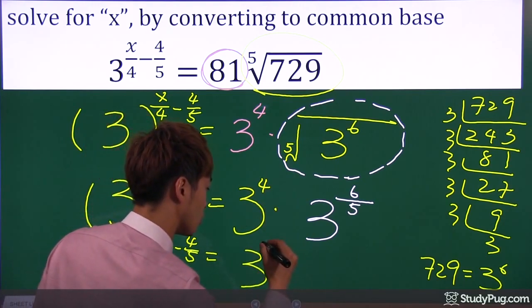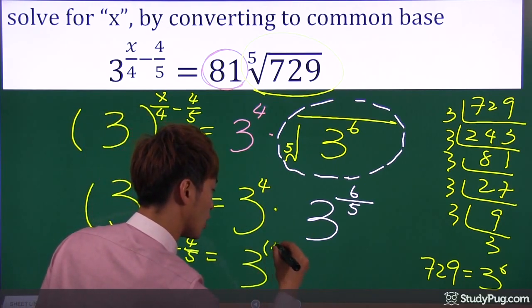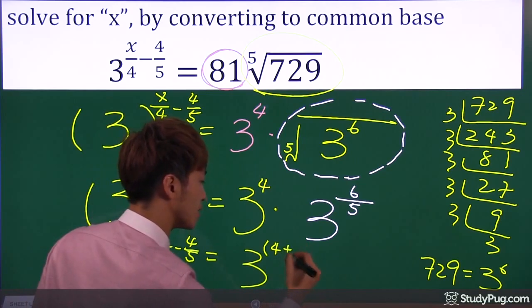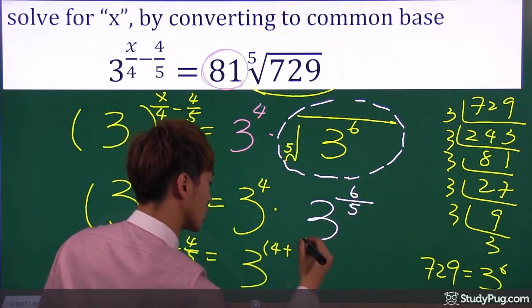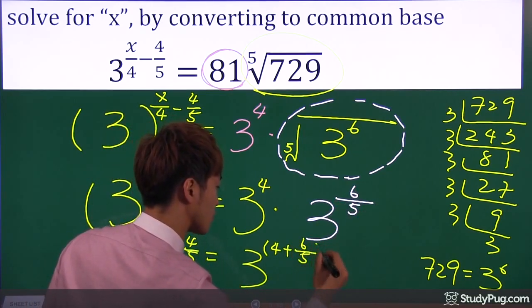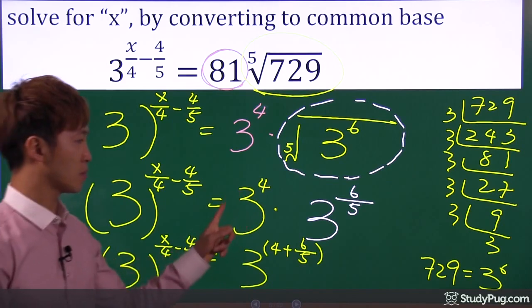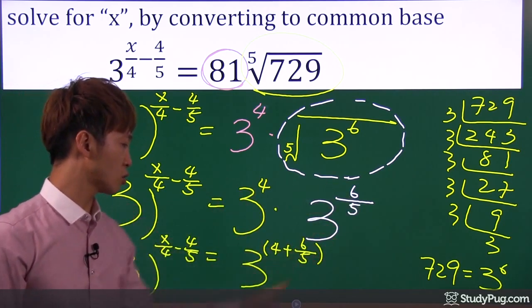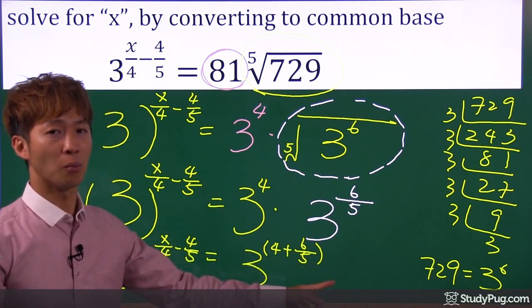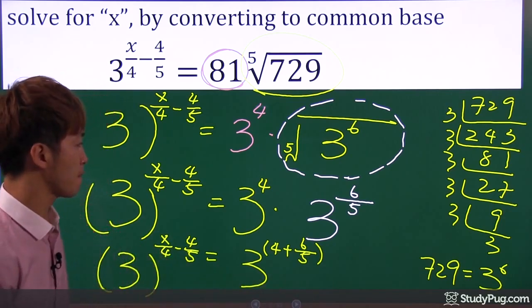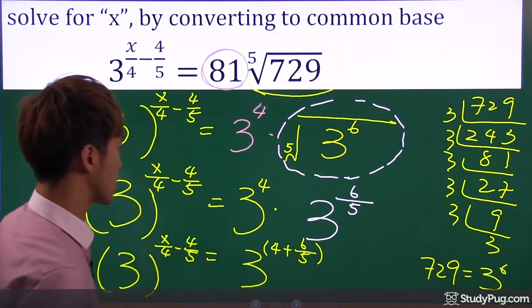So now, base of three times base of three. When we combine them together, what do we do with the exponent? We add them up. So we have four, add the second exponent, six over five. You see that?